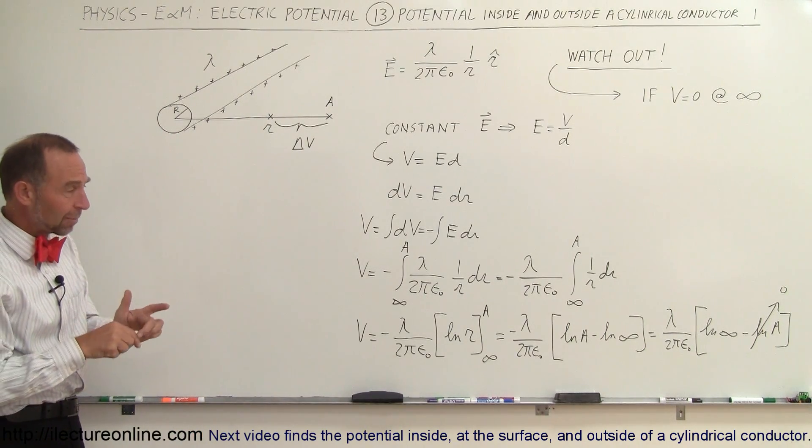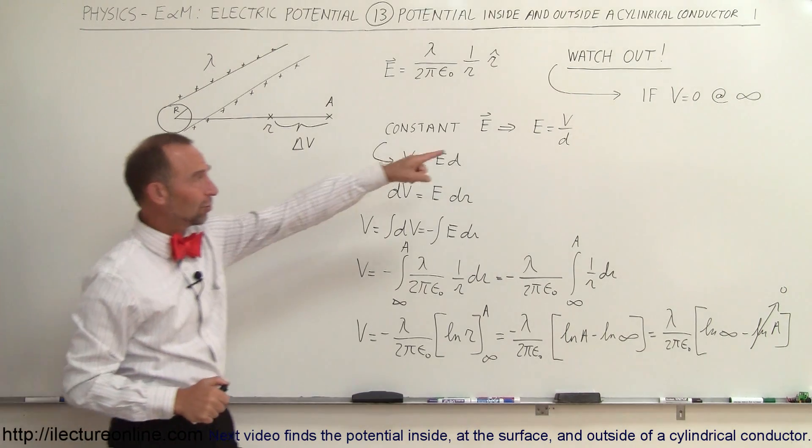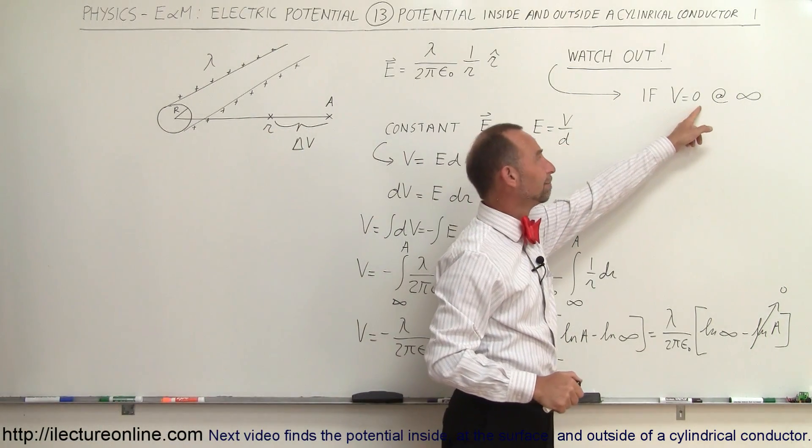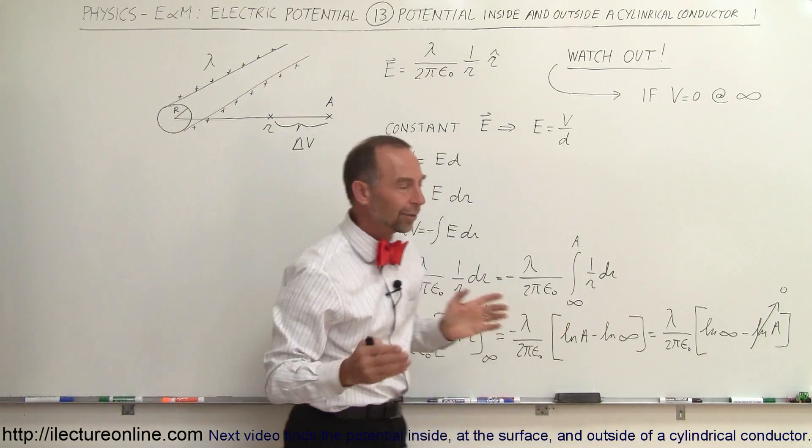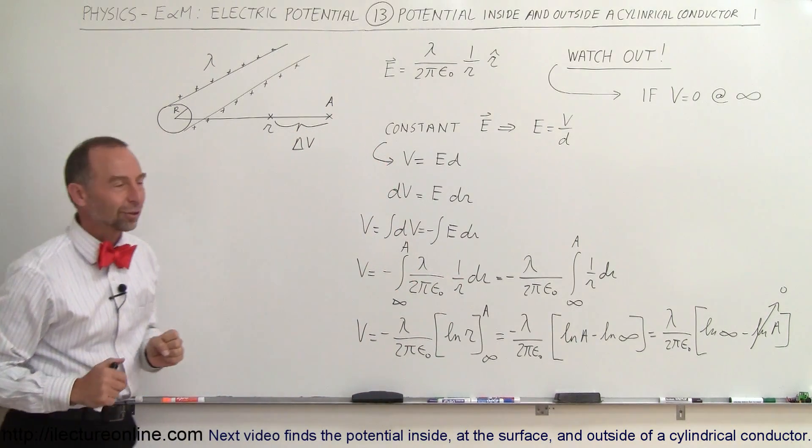That's the only way we're able to talk about it, because we can't make the assumption that at infinity, V is equal to zero. That doesn't work for a cylindrical conductor.